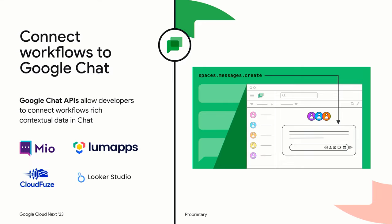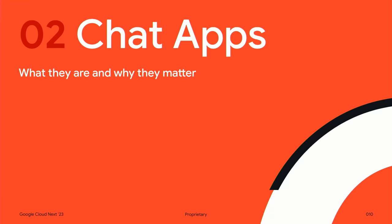Then Mike will talk to you about the new chat APIs. He'll share how we have launched new API features for chat that let you bring many more workflows into chat, including creating new spaces, adding people to those spaces, and many more. Mike will also be speaking with Sean from our partner LumApps about how they've used the APIs today to benefit our shared customers. First, chat apps.